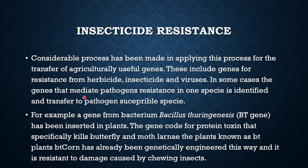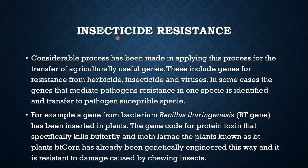Insecticide resistance: an insecticide is a chemical that kills insects. We sometimes add chemicals, or spray insecticides, onto crops to kill insects. However, if you add chemicals to crops, it can also affect the crop itself because it is a chemical with chemical effects. So we use genetic engineering to make the crop resistant to the insecticide spray.